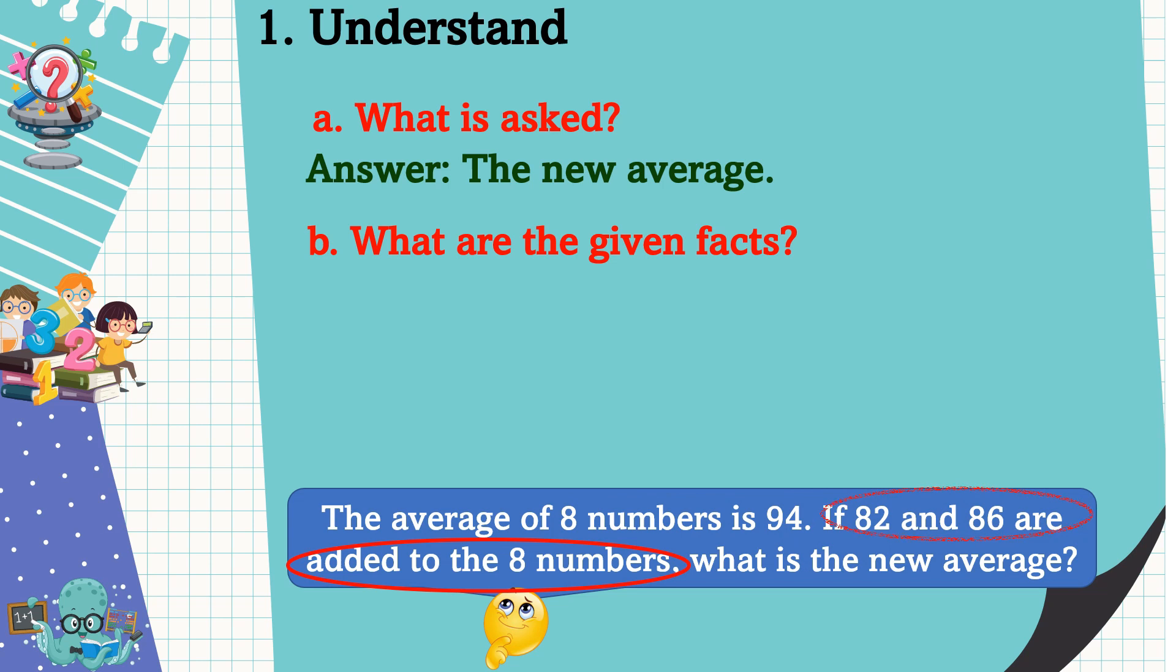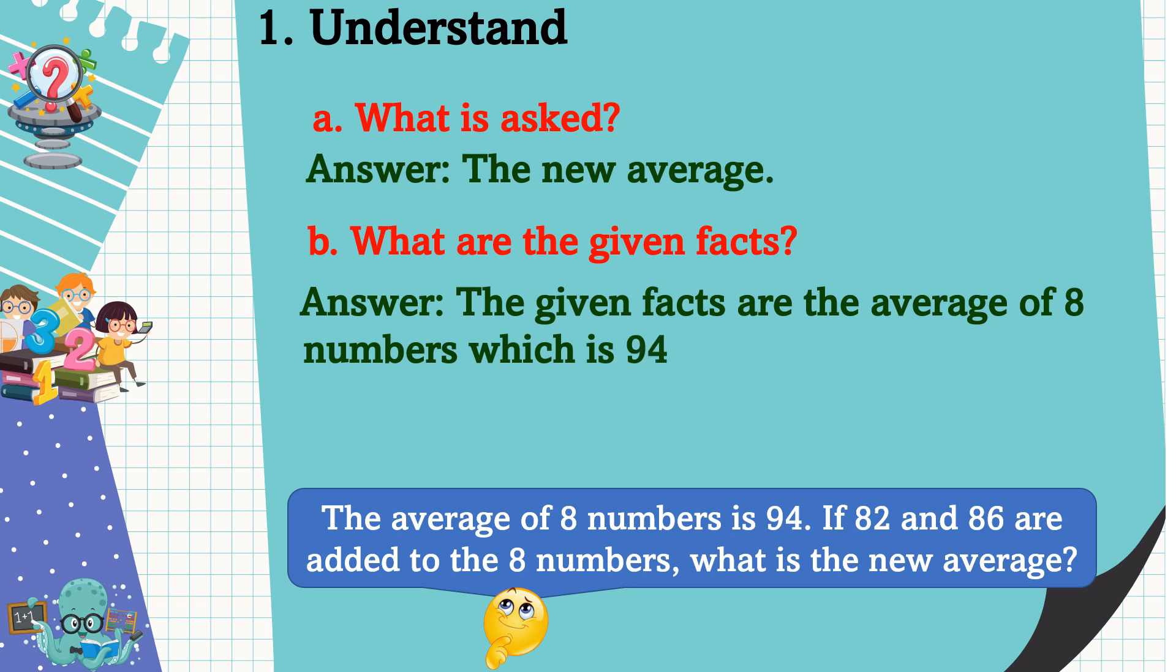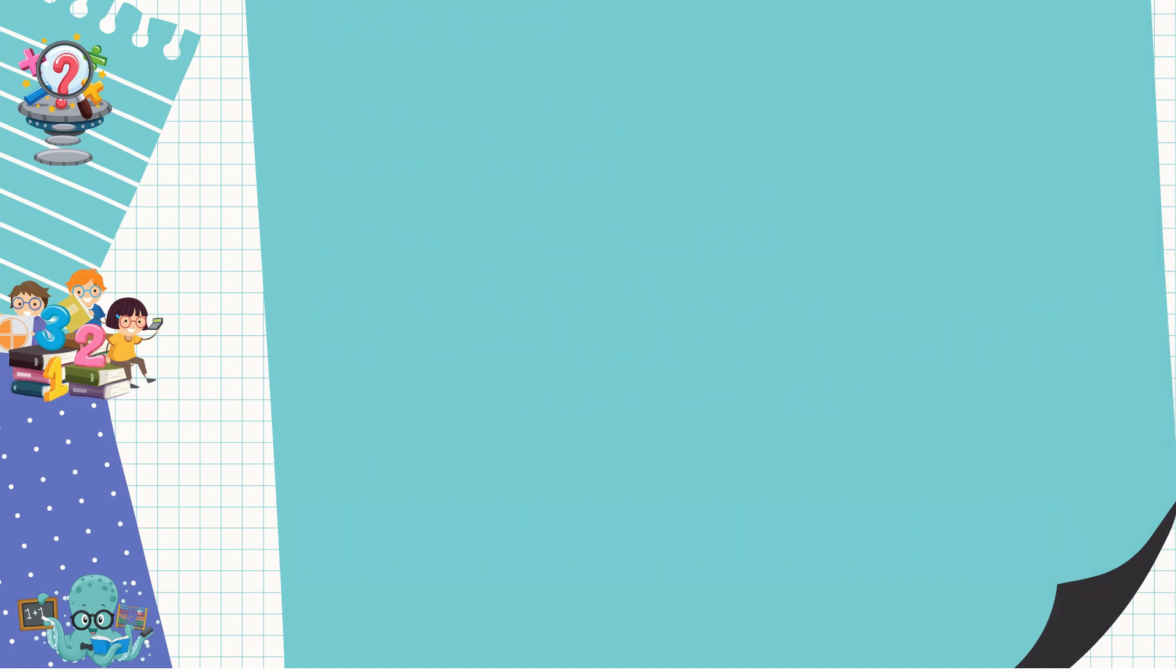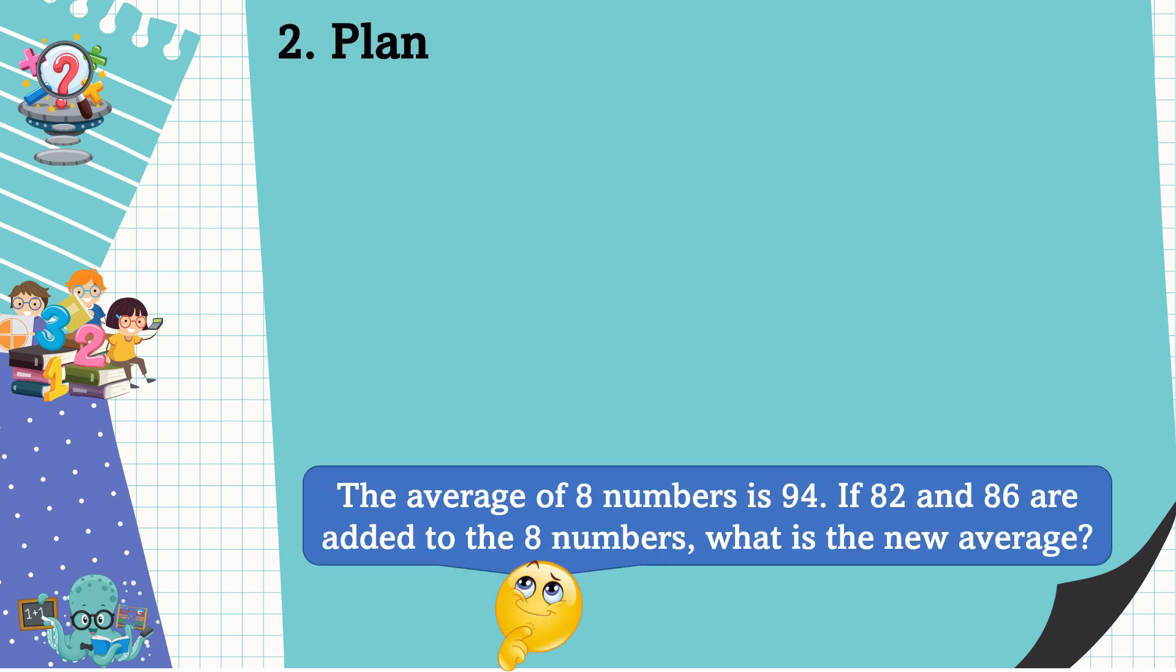What are the given facts? When we say given facts, these are numbers or statements that help to solve the problem. The given facts are the average of eight numbers, which is 94, and also 82 and 86 are the new numbers to be added. Now we already understand the problem, so what is the next step?